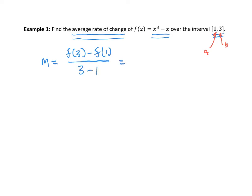Plugging the numbers in: 3 cubed is 27, minus 3 gives 24, over 3 minus 1 which is 2. So it's 24 over 2. The average rate of change, or slope of that secant line, is 12. This function is not the same one in the picture, because 12 is pretty steep. But for this function on this interval, the average rate of change is 12. That's all you do: f of b minus f of a over b minus a.